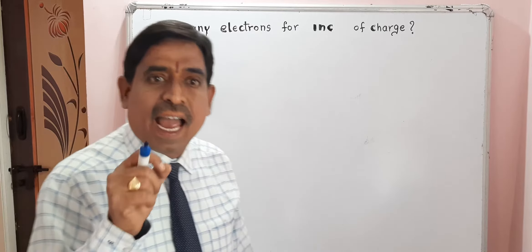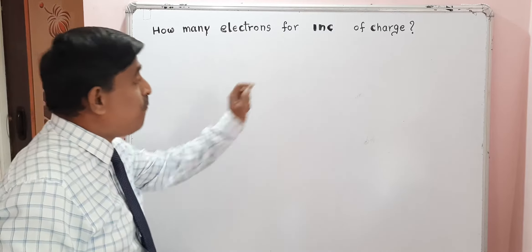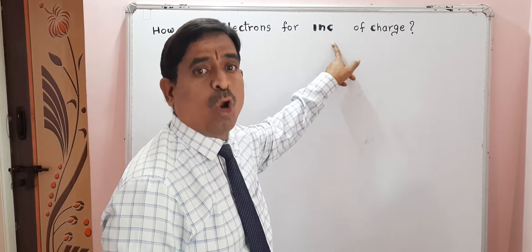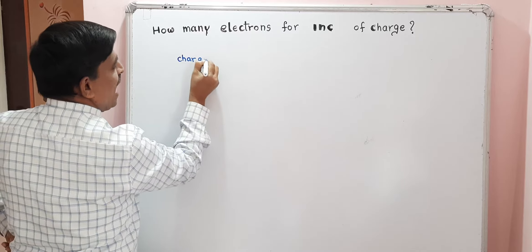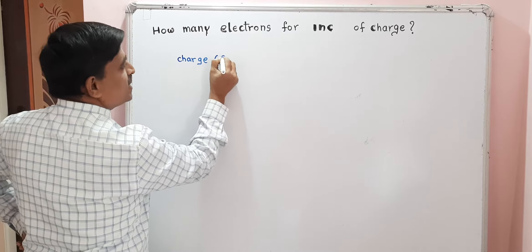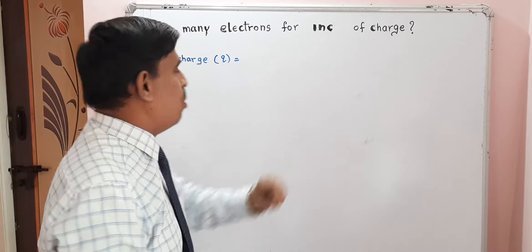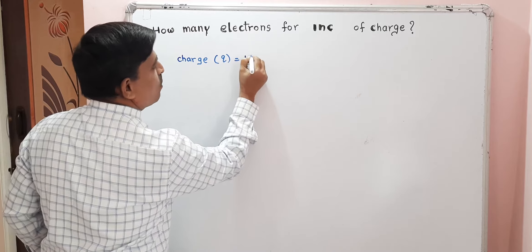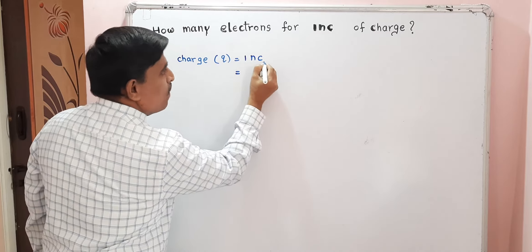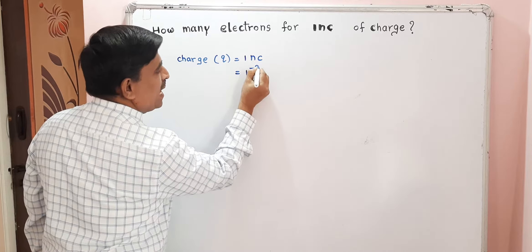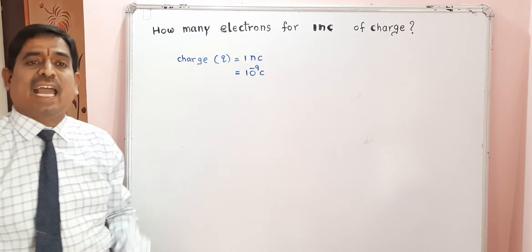Today, I am explaining how many electrons are in one nano coulomb of charge. In this problem, charge is given as Q, and Q is equal to one nano coulomb, which means 10 power minus 9 coulomb.